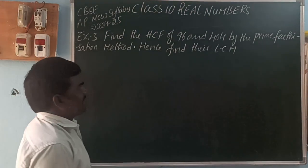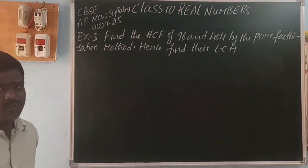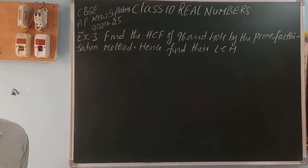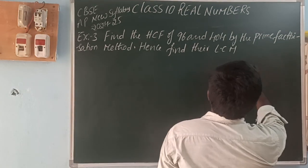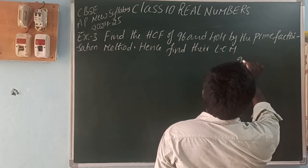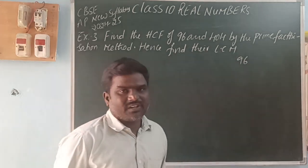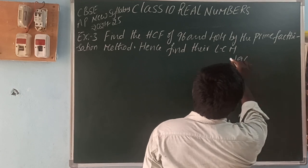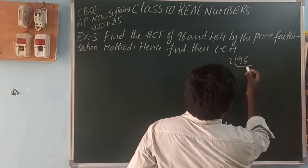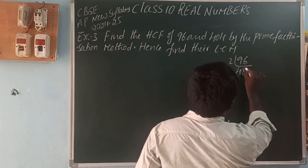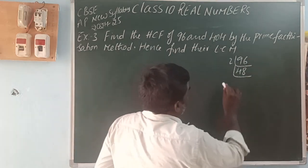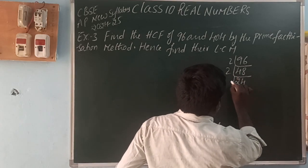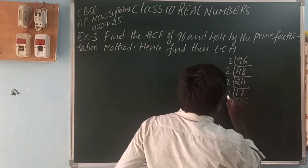Next, find the HCF of 96 and 404. First, prime factorize 96. The least prime number is 2, so divide: 96 ÷ 2 = 48, ÷ 2 = 24, ÷ 2 = 12, ÷ 2 = 6, ÷ 2 = 3, ÷ 3 = 1.